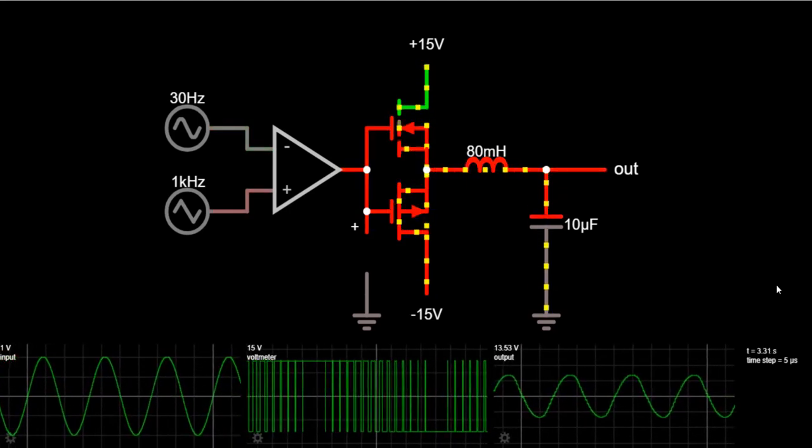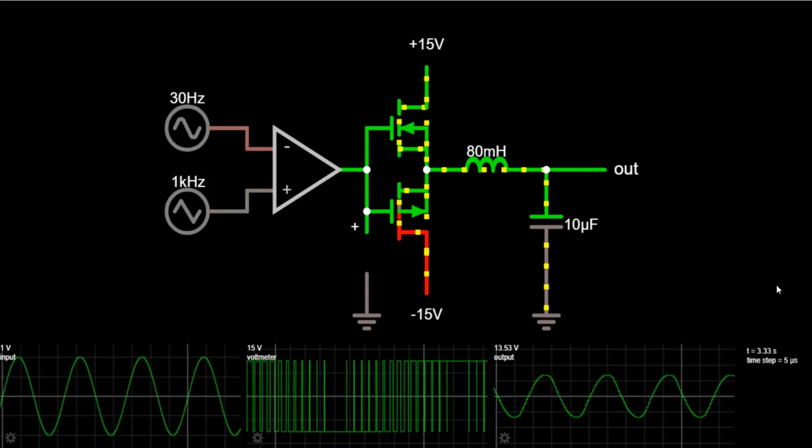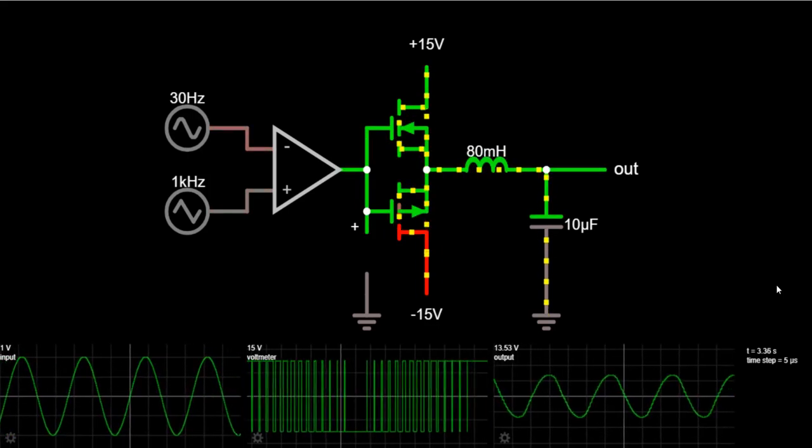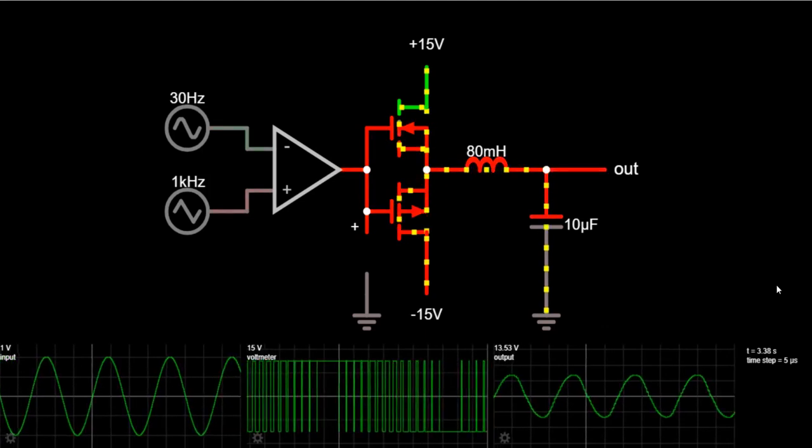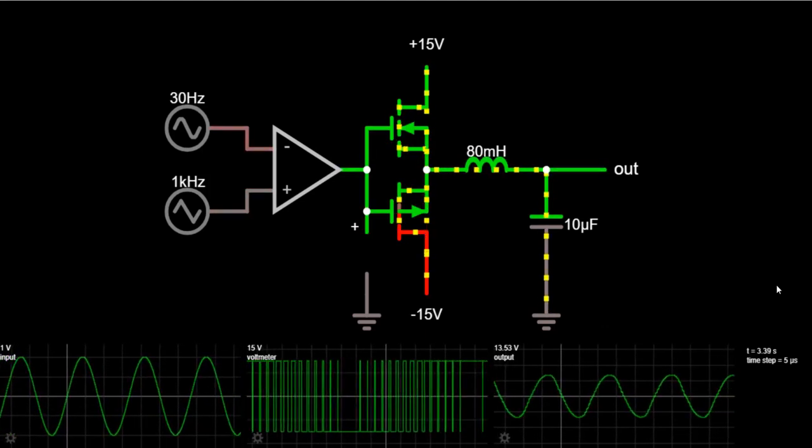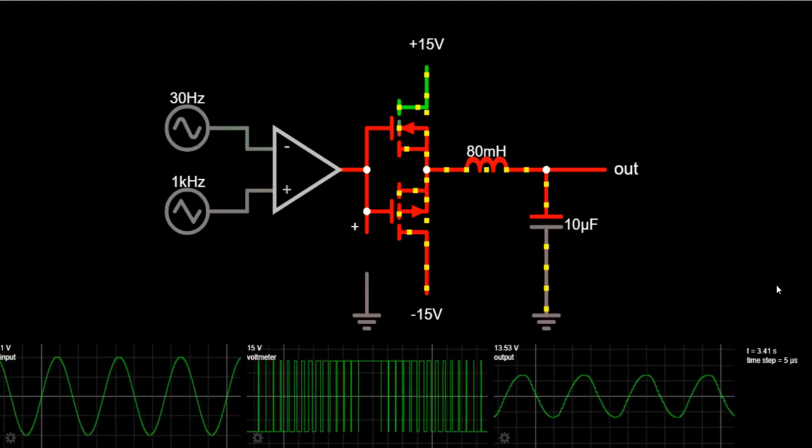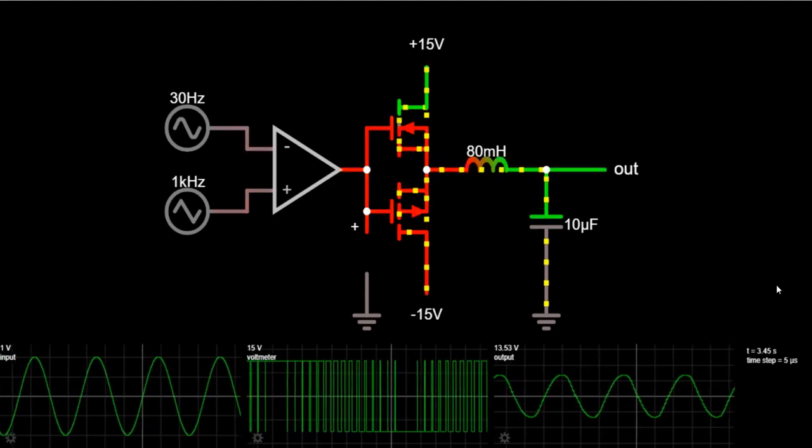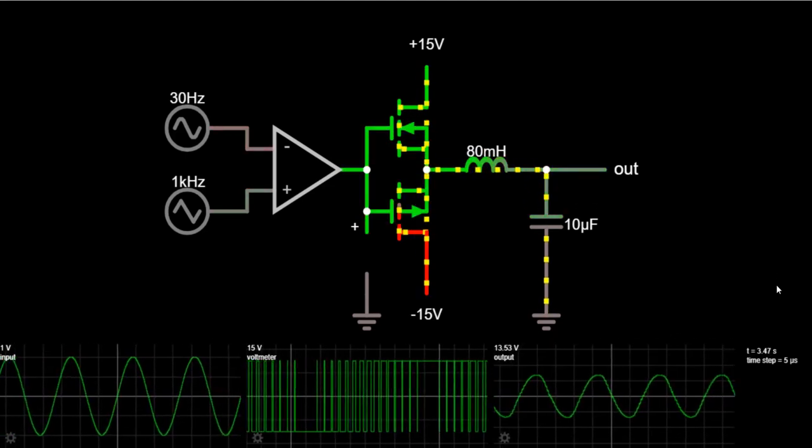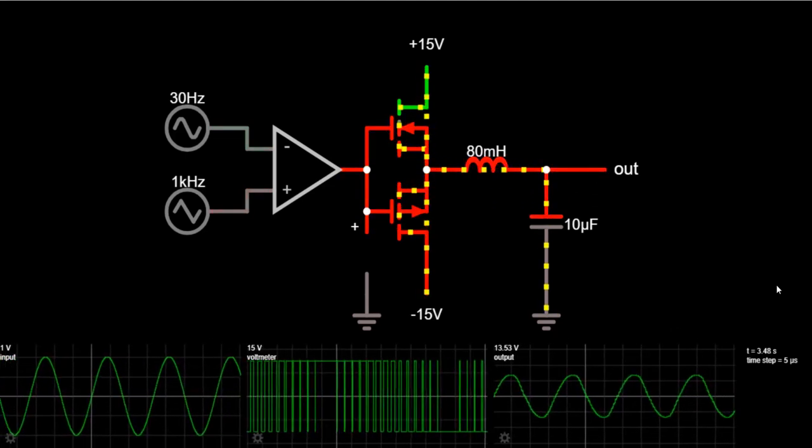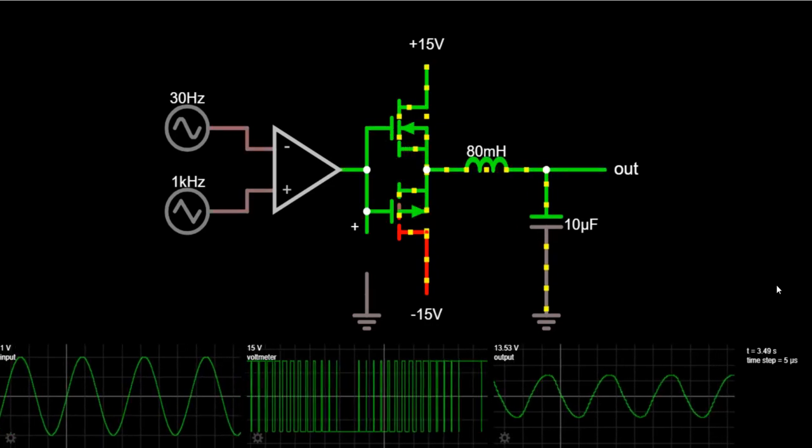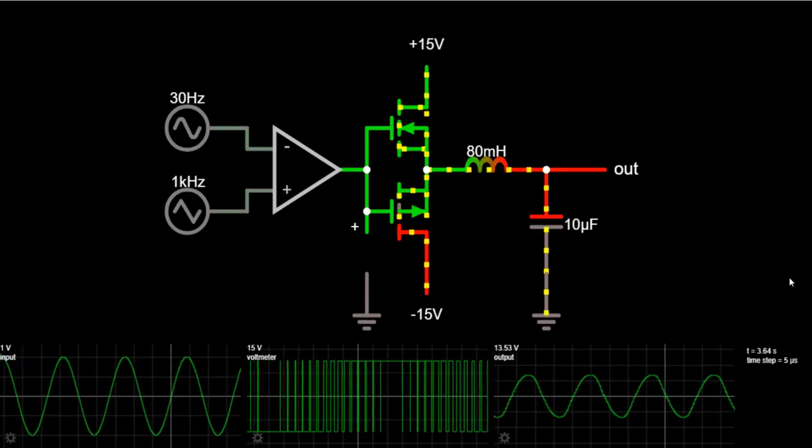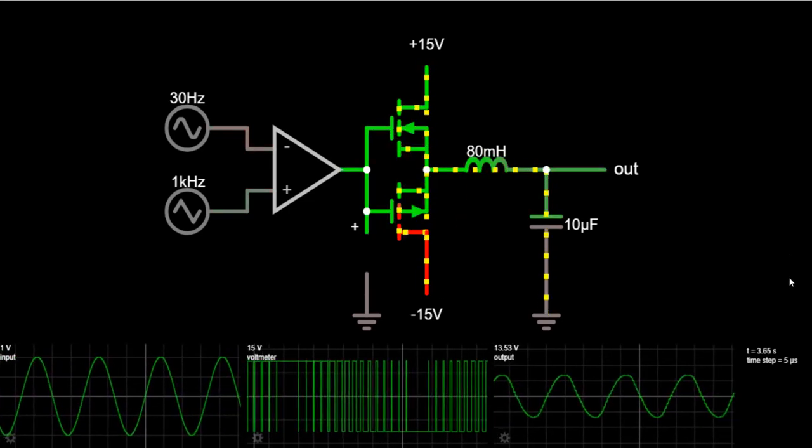These class D amplifiers work by generating a train of square pulses of constant amplitude, but the width and the separation between these pulses vary. This represents the amplitude variations of the analog audio input signal. So this was the basic introduction of class D amplifiers.